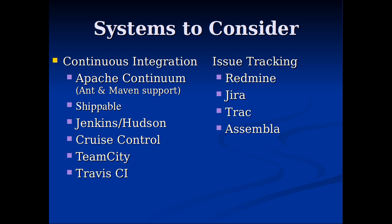Use a local database if you want — that's great, you don't want to be going over the network all the time — but be clear that your code is ultimately going to run against a centralized database over the network. Use a version control procedure to share those database assets and don't let the database administrator be a big bottleneck. For continuous integration, Apache Continuum has good support for Ant and Maven. Shippable is another option. Jenkins and Hudson — one was a takeoff on the other, one is open source. There are also TeamCity, CruiseControl, and Travis CI, which has very good integration with GitHub.